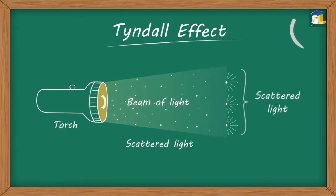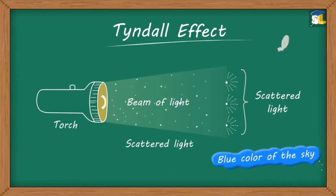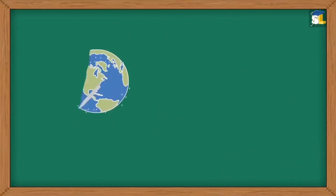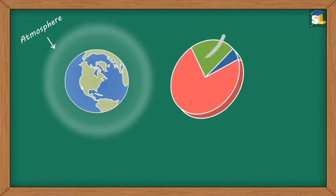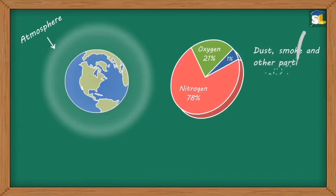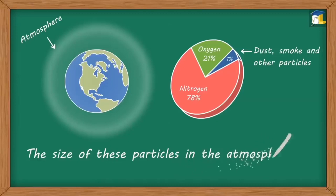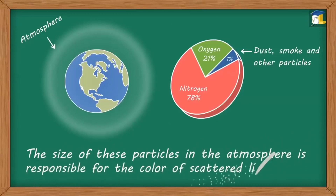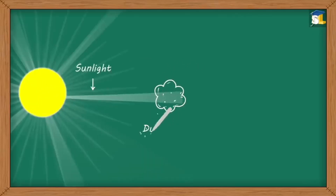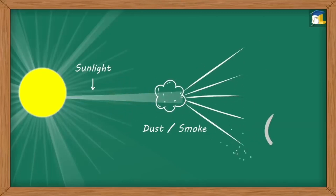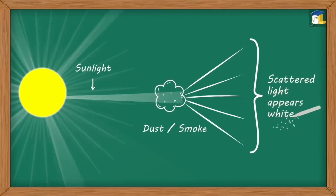This scattering of light is responsible for the blue color of the sky. We know that our atmosphere primarily consists of oxygen and nitrogen particles, along with dust, smoke, and other particles in comparatively smaller proportions. The size of these particles in the atmosphere is responsible for the color of scattered light. When the sunlight strikes particles of dust, smoke, etc., which are bigger than the wavelength of sunlight, all the colors of sunlight are equally scattered. As a result, the scattered light appears white.